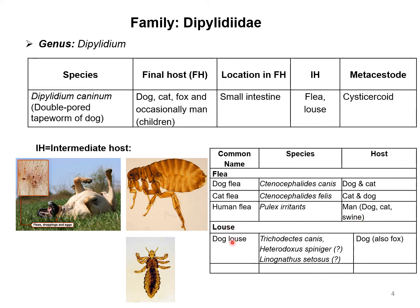Some of the lice also incriminated to be involved in the life cycle of this parasite are Trichodectes canis, Heterodoxus spiniger, and Linognathus species.